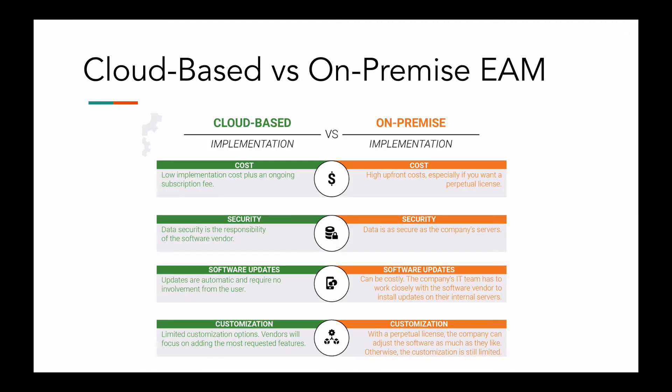Now let's look at cloud-based versus on-premise EAM. Cloud-based solutions, often referred to as SaaS — software as a service — are hosted on the vendor's servers. Users pay a monthly or yearly subscription fee and can immediately access the software through a web browser, though a mobile app may also be available. On-premise software must be installed locally on the company's internal servers, often after acquiring a perpetual license, though it can be subscription-based too. Both are similar in long-term cost, but on-premise solutions have higher implementation costs. Cloud-based solutions are generally preferred unless the company already has an on-premise ERP system to integrate with or needs to heavily modify the software for a unique manufacturing process.